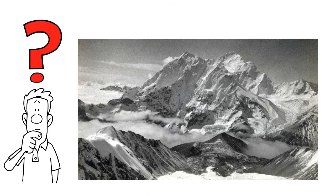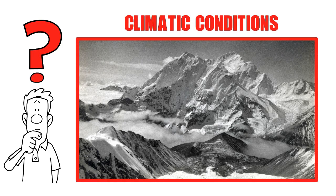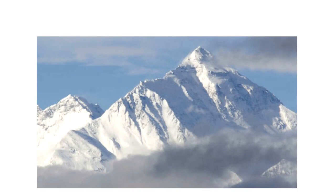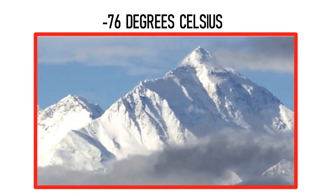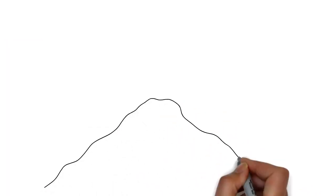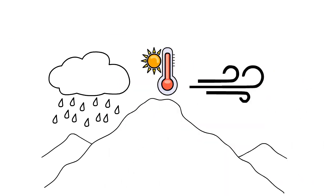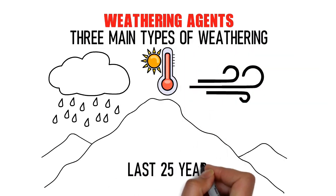For example, 25 years ago, Mount Everest was young and thicker. However, due to different climatic conditions at its peak, its structure failed to stand strong for a long period. Sometimes it is hit with excessive heat by the sun, and sometimes it immediately gets covered with thick snow. Temperatures can drop to as low as minus 76 degrees Celsius. So when a rock, no matter how big or small, gets hit with so many different forces of nature, it breaks down eventually. All these things that contribute towards breaking a rock are called weathering agents. There are three main types of weathering that made Mount Everest thinner in the last 25 years.